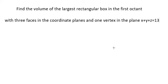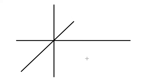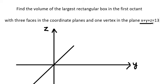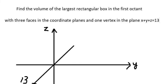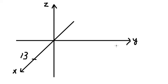The first thing we need to do is draw the diagram. This axis is for x, this one is for y, and this one is for z. The plane is x plus y plus z equals 13. If we put y and z equal to zero, then x equals 13, so we plot the point 13 on the x-axis. Similarly, if x and z equal zero, then y equals 13.